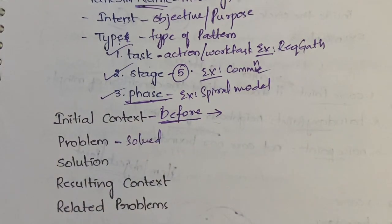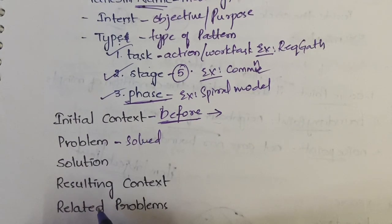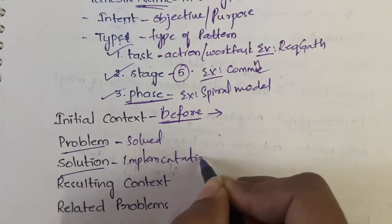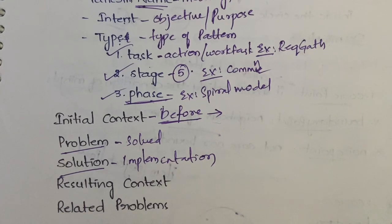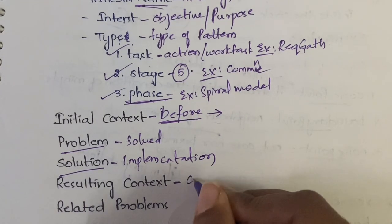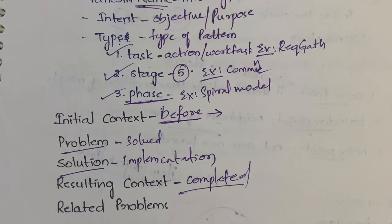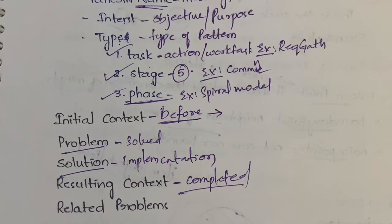Problem is the problem to be solved by the pattern — why you are defining this pattern, in order to solve a problem. Solution is the implementation of the pattern. Resulting context is what happens upon completion of the pattern — any advantages, disadvantages, whether the purpose of the pattern is satisfied — all of these come under resulting context. Related problems covers any problems related to the pattern, if any.